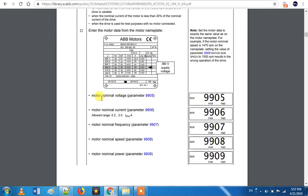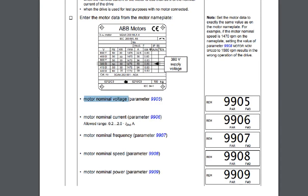So that is the vector speed — that is 99.04. In 99.05, the motor nominal voltage: you can tell the motor the input voltage. I have to choose the input voltage.